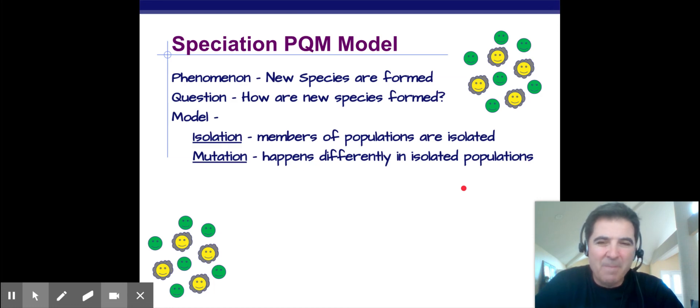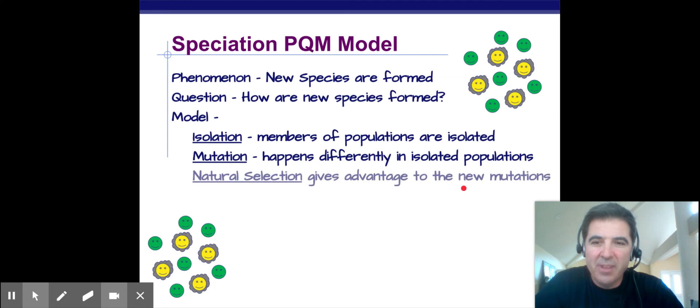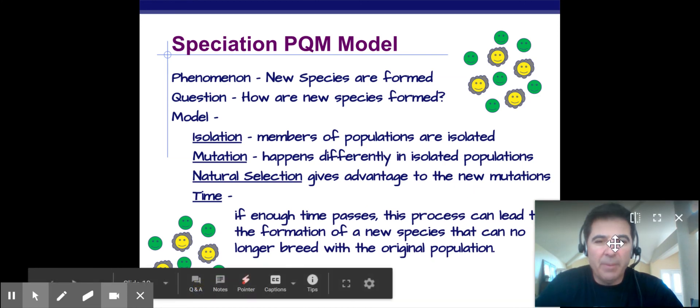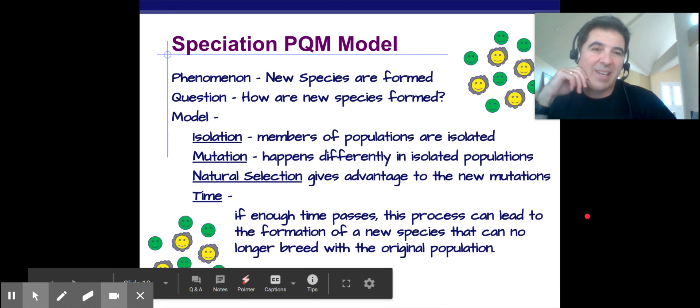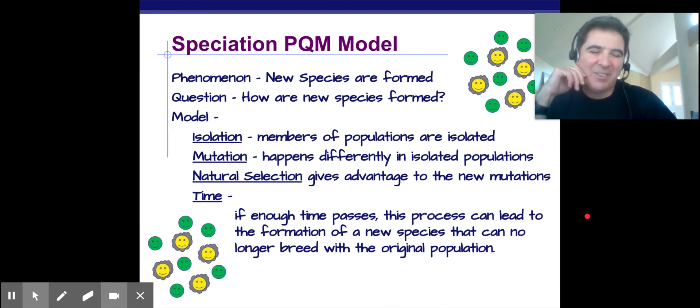And then you have to have mutations occur differently in the isolated populations. So an entrance of new genes that were never there before and probably won't be ever in the other population. And then natural selection has to give advantage to the mutation. So it has to be an advantage. And over time, a long time, this can lead to a formation of a new species that can no longer breed with the original population. And if you take this far enough, over time you would get to the whole idea of the tree of life in evolution, going back to the idea that we all share common ancestry. And so that's the basic idea of speciation in our model. And I hope you had a great day and learned a lot, and I will see you later.